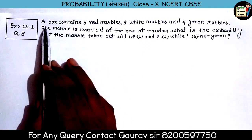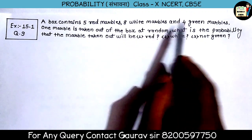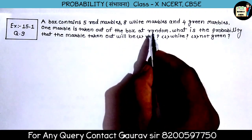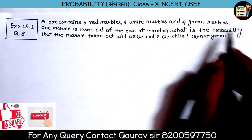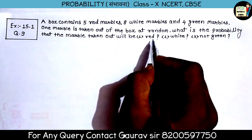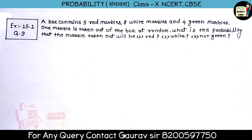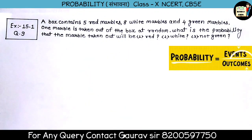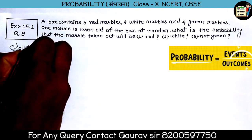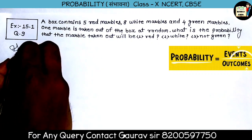Question 9: A box contains five red marbles, eight white marbles, and four green marbles. One marble is taken out of the box at random. What is the probability that the marble taken out will be: first, a red marble; second, white; and third, not green? So this time we need to find the probability.